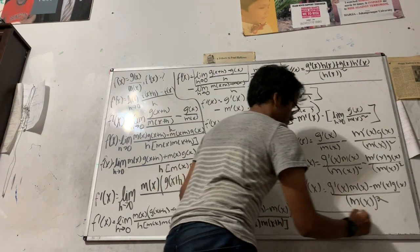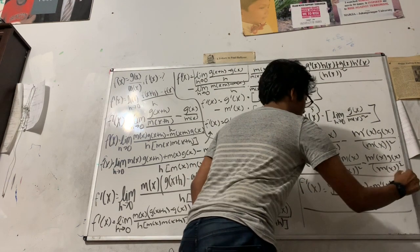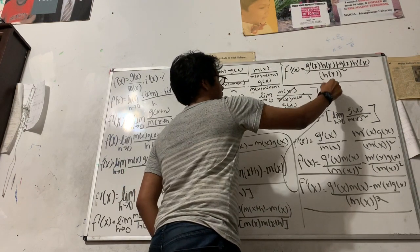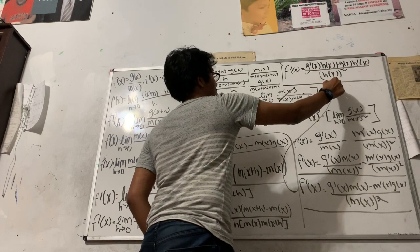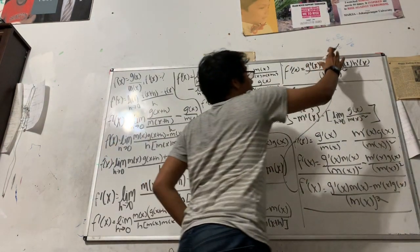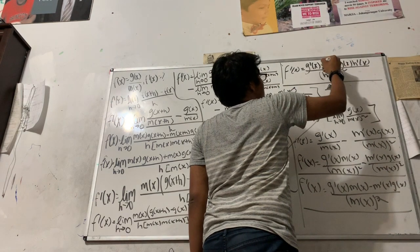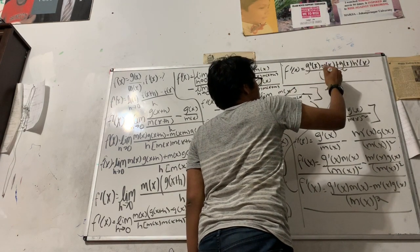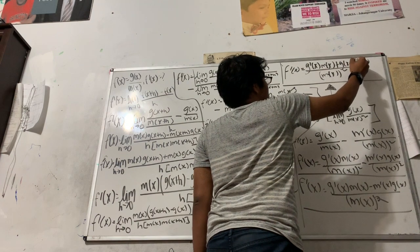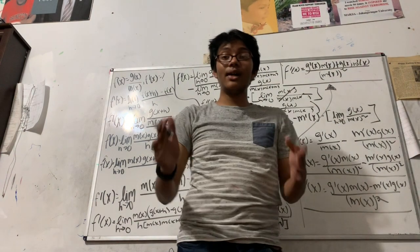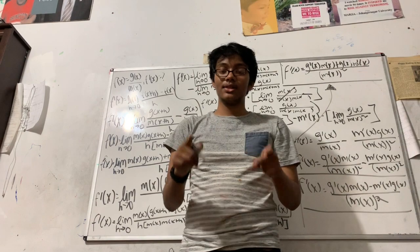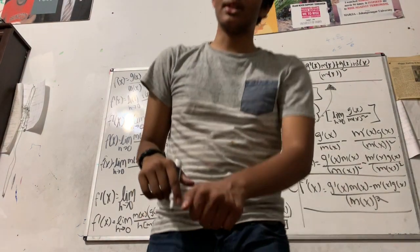Now if you compare this with our original quotient rule, you'll see they're exactly equivalent — except I used m instead of h so you don't get confused with the notation. But otherwise they're exactly identical, and now we've just proved the quotient rule. Thank you for watching and I will see you next time.